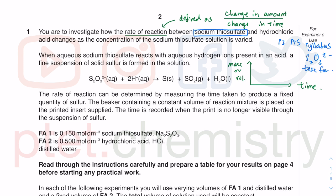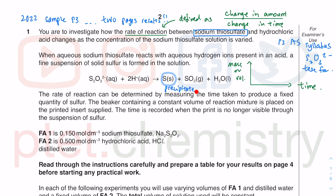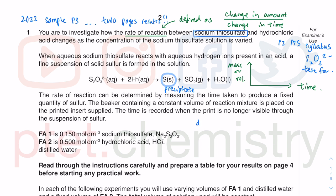Have a look in the 2022 sample paper 3. You will see that at the back of the two-page results section, thiosulfate ions are indicated as one of the ions in the table for cations and anions to be tested for. It will give you a white precipitate — which actually looks more like a pale yellow precipitate in the presence of an acid. That's essentially what you're doing here: producing the sulfur precipitate, which will obscure the cross underneath the conical flask. That's why we call this the disappearing cross.